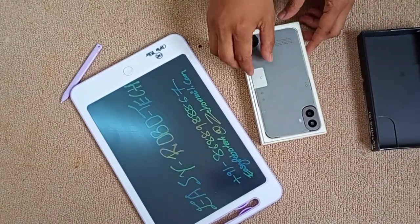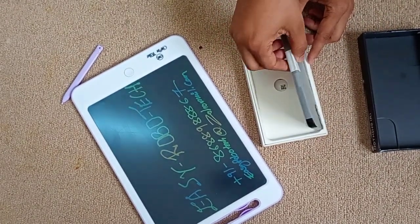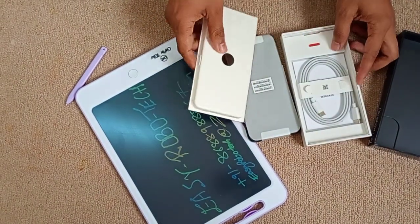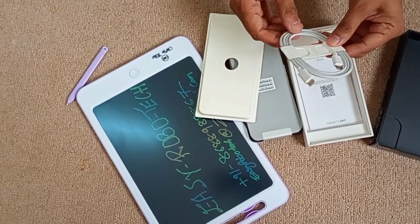As we lift the lid, the first thing we see is the phone itself, nestled in a protective layer. Let's take it out and set it aside for a moment while we explore the rest of the box.